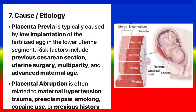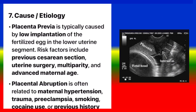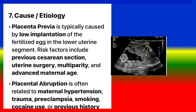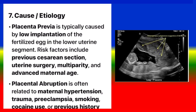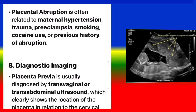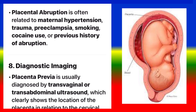Cause and etiology. Placenta previa is typically caused by low implantation of the fertilized egg in the lower uterine segment. Risk factors include previous cesarean section, uterine surgery, multi-parity, and advanced maternal age. Placental abruption is often related to maternal hypertension, trauma, preeclampsia, smoking, cocaine use, or previous history of abruption.